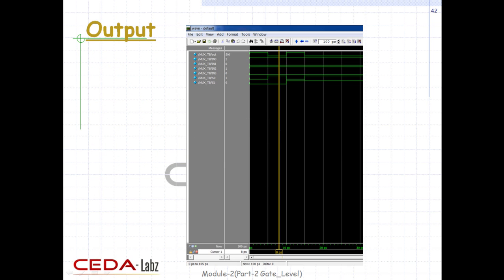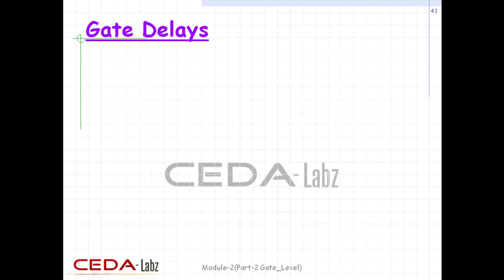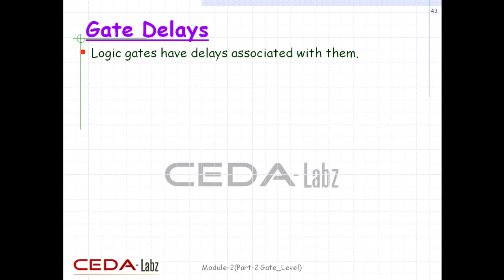This multiplexer can be tested with the stimulus shown, which checks that each combination of select signals connects the appropriate input to the output. This is the simulation output of the multiplexer. Until now, we described circuits without any delays — that is, zero delay. In real circuits, logic gates have delays associated with them. Gate delays allow the Verilog user to specify delays through the logic circuits, and the gate delay can be specified in the gate instantiation itself.